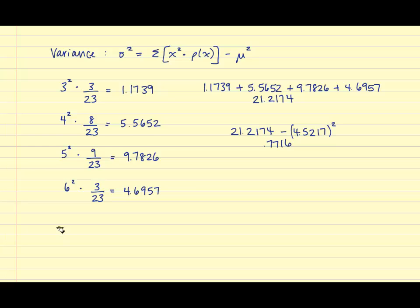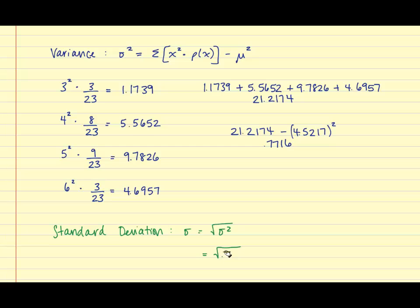Finally, to compute the standard deviation — the notation is simply sigma — which is found by taking the square root of the variance. We found the variance to be 0.7716, so once we take the square root of that, we end up with 0.878. The standard deviation is 0.878.